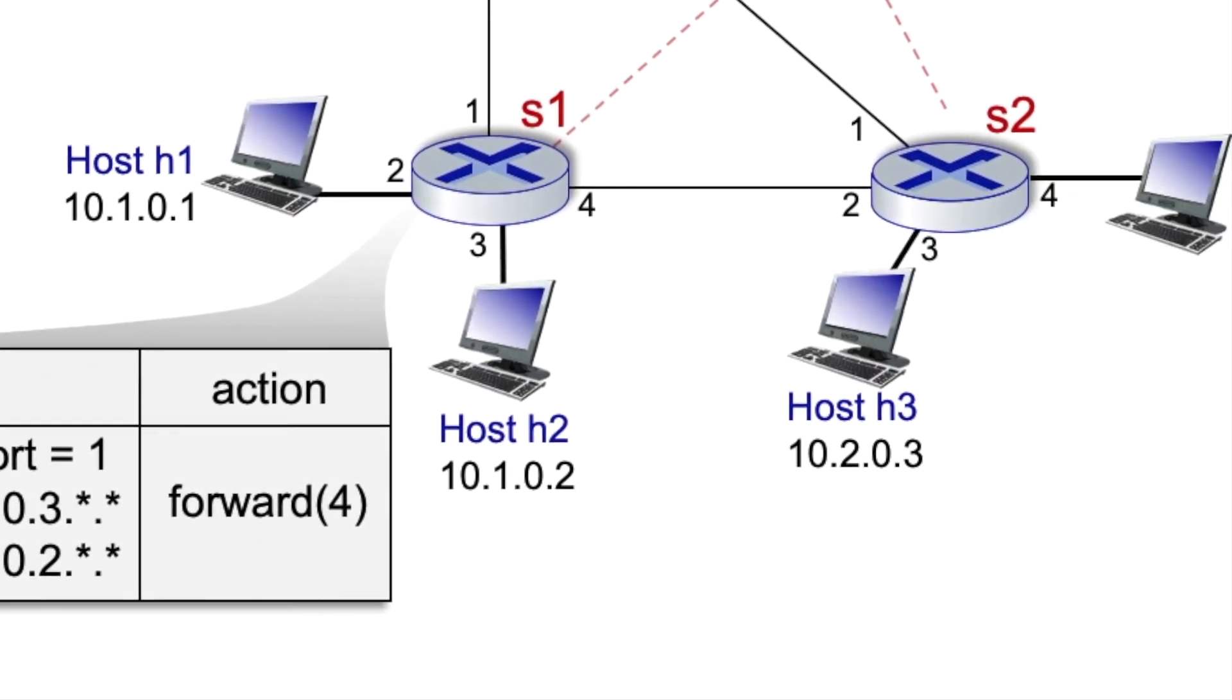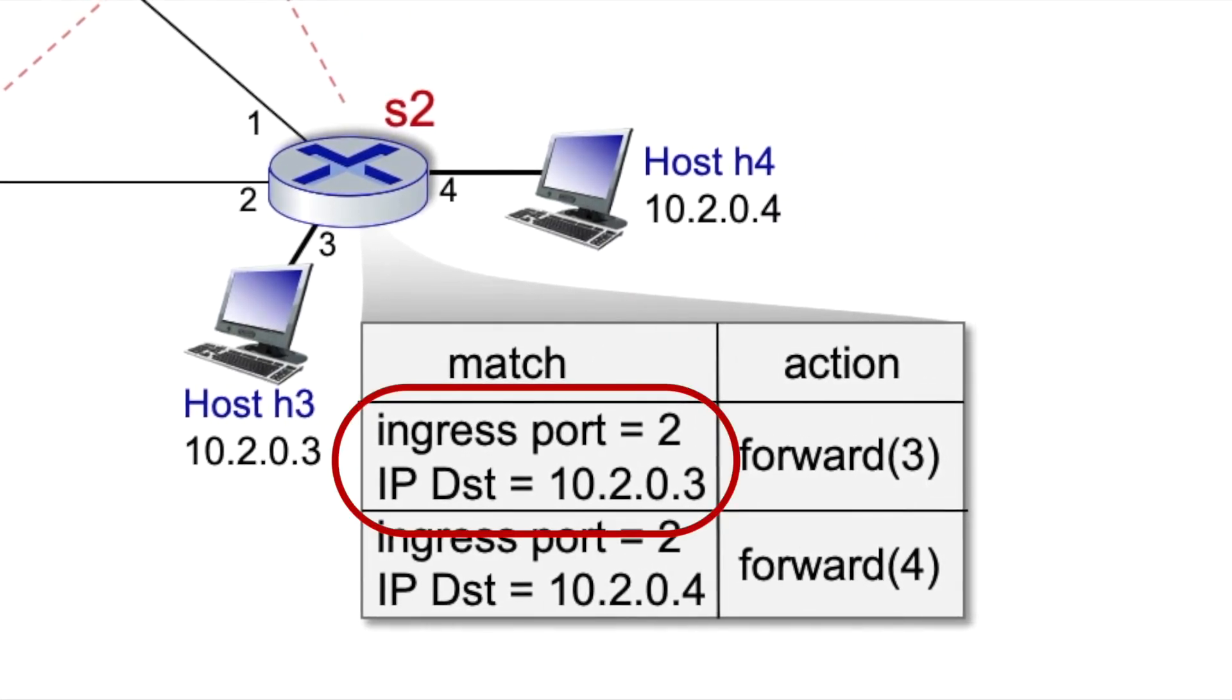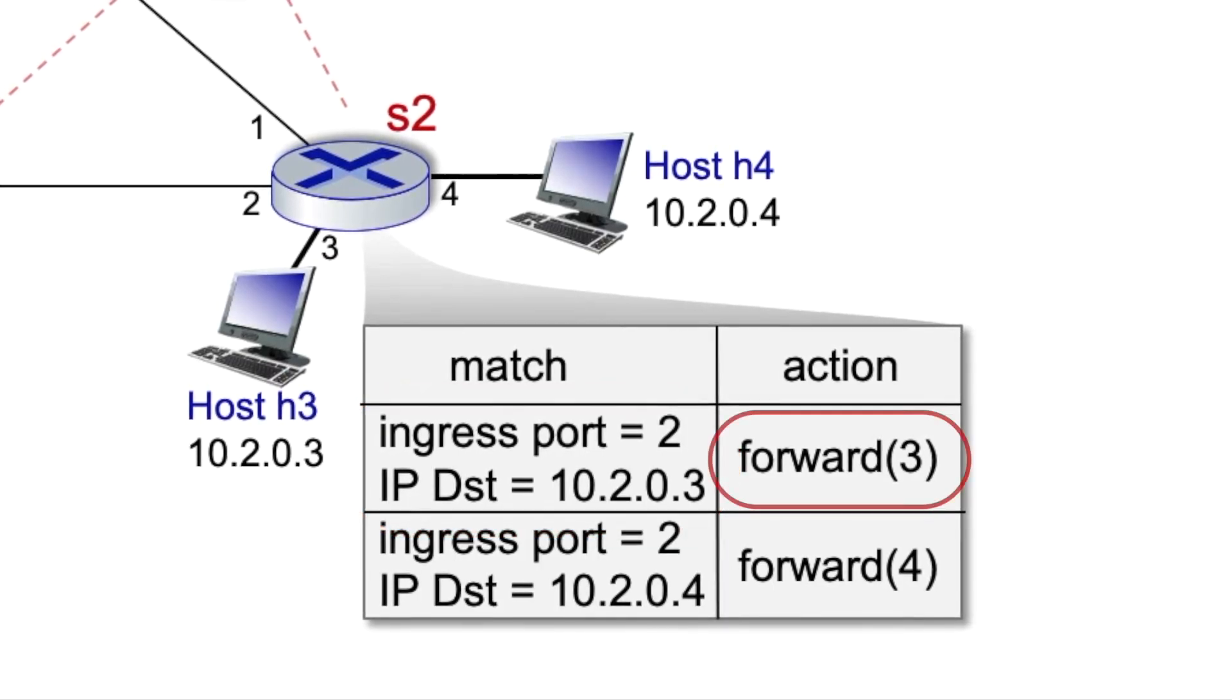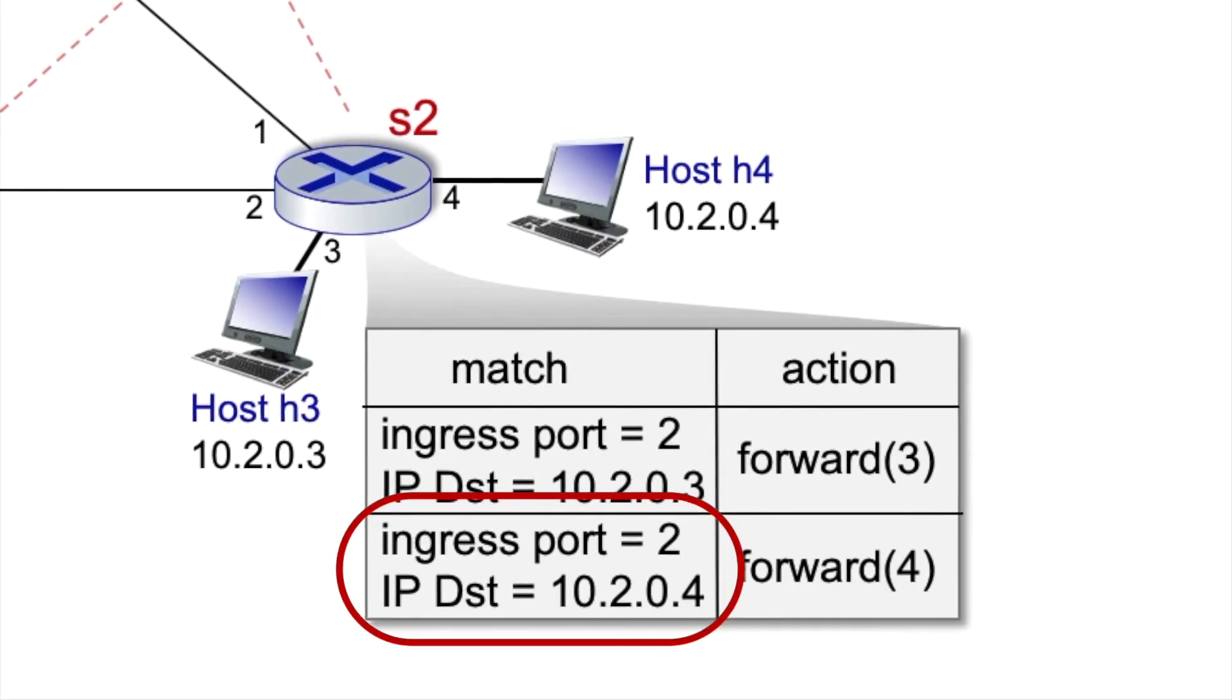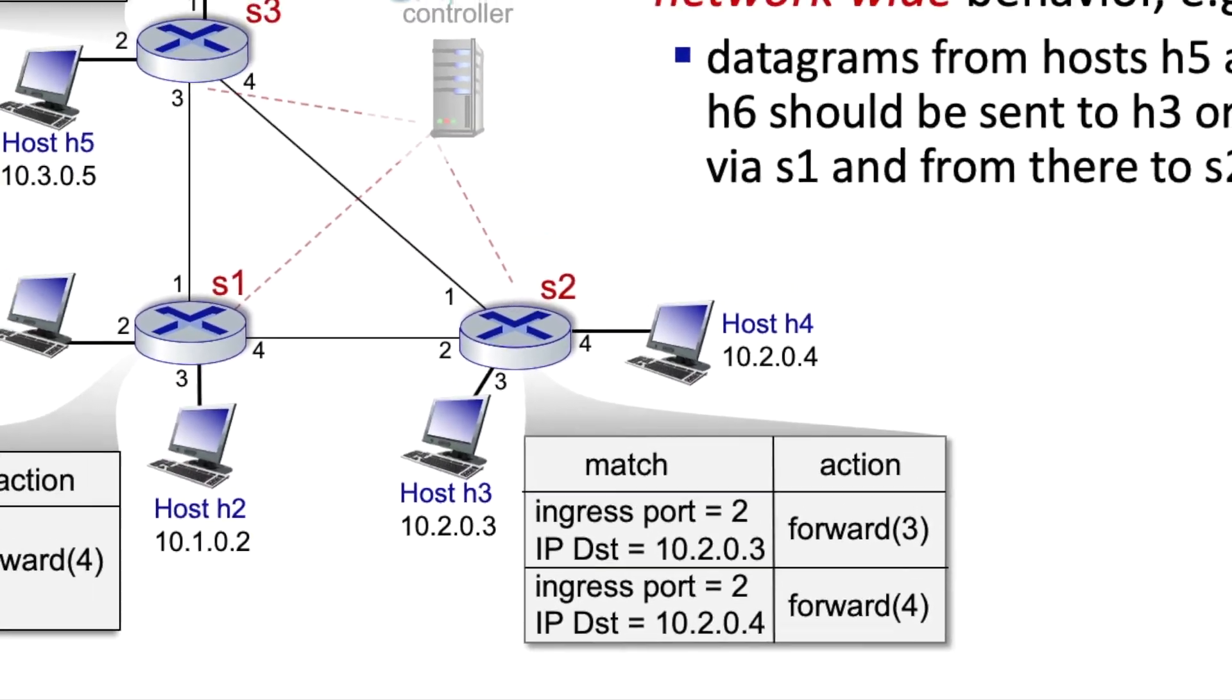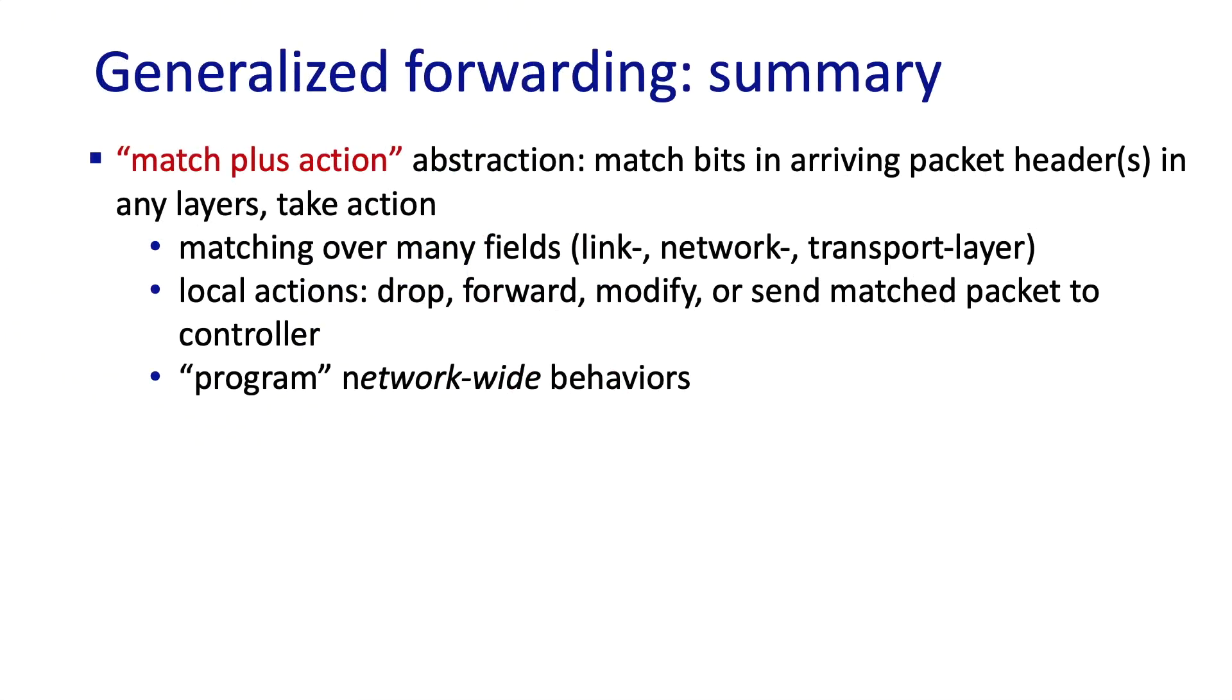And the forwarding table here in S2 says that traffic coming in on port 2 and destined to 10.2.0.3 needs to be forwarded via local port 3, and that traffic coming in on port 2 and destined to 10.2.0.4 needs to be forwarded via local port 4.